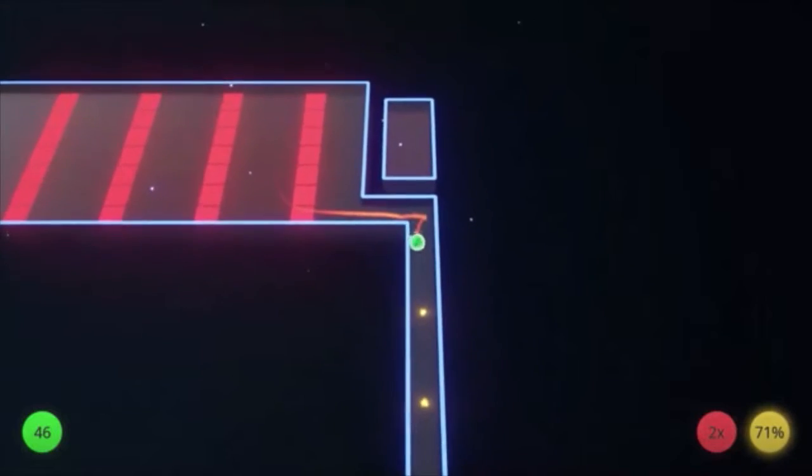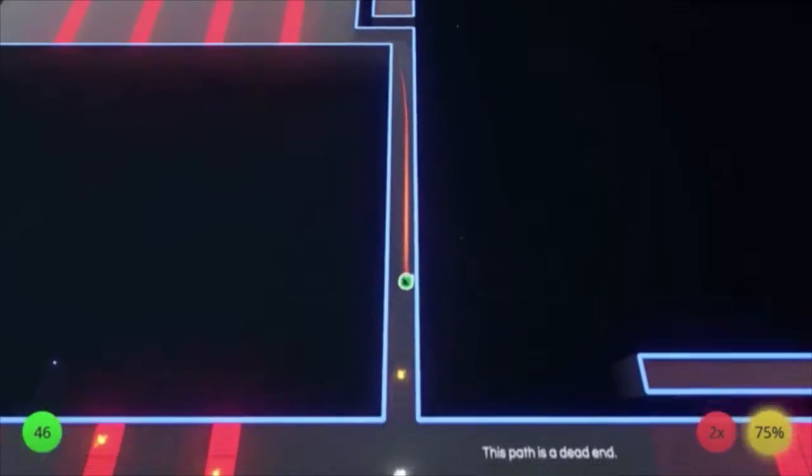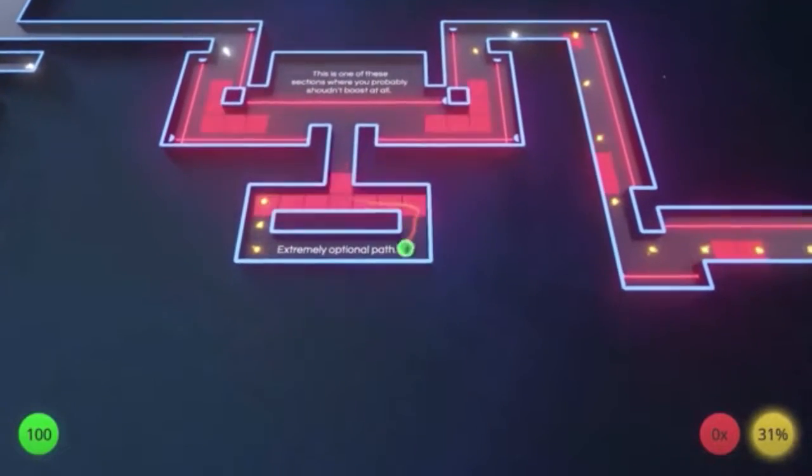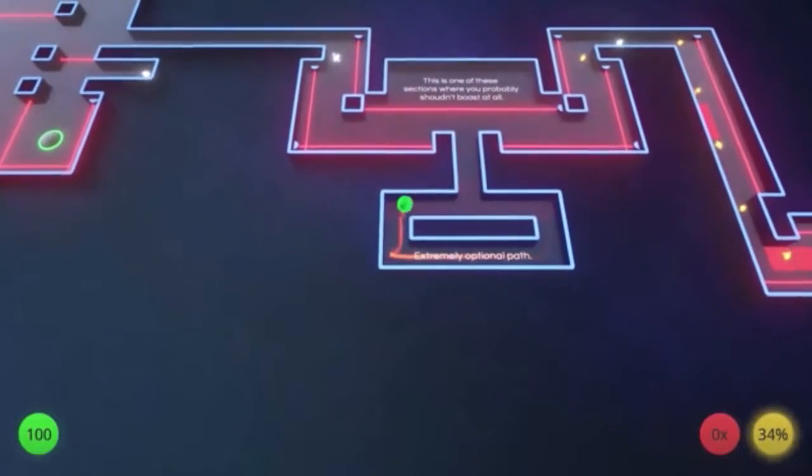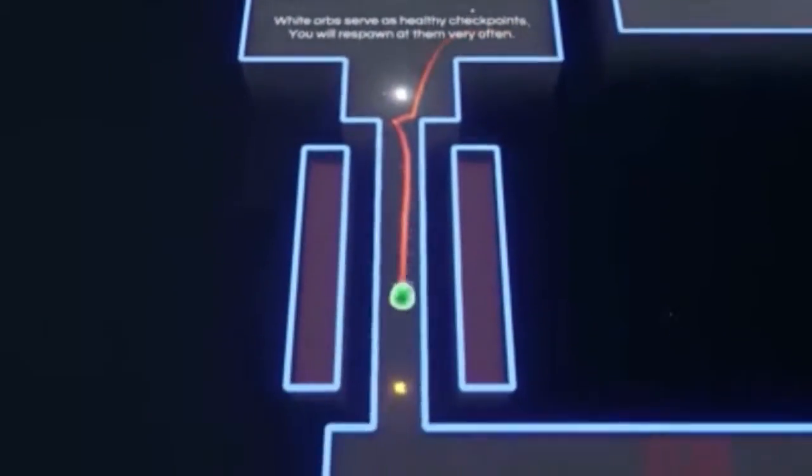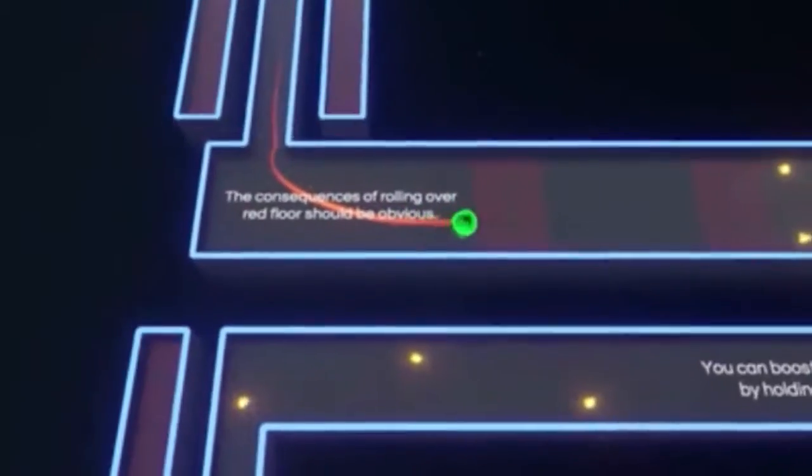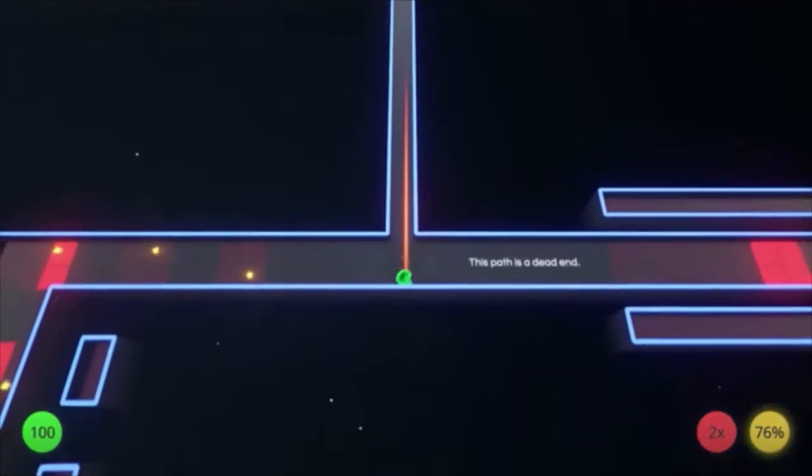The object of each level is to collect the glowing yellow orbs while recognizing the patterns taking place between the obstacles and the beat of the music. Along your journey, you will run into white orbs which will replenish your health and serve as a checkpoint and respawn area.